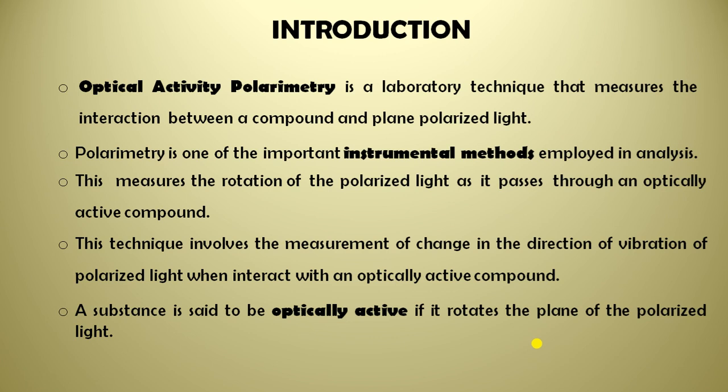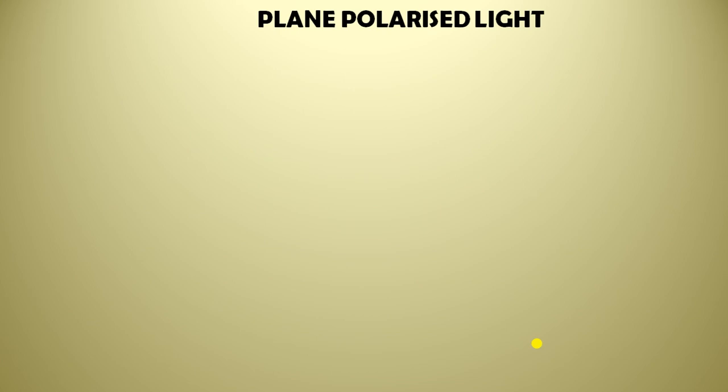Now, what exactly is an optically active compound? These are the substances which are optically active — they rotate plane polarized light either clockwise or anti-clockwise. This is known as the optically active substance. Optical activity is the property of a substance to rotate the plane polarized light, and the substance is known as the optically active substance.